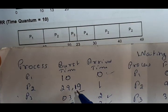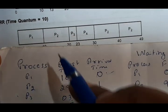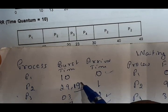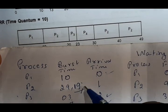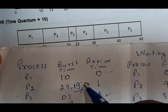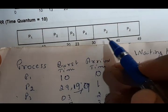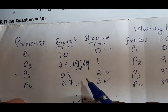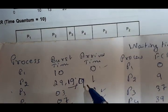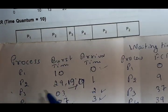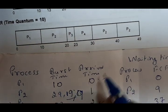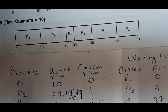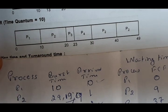P2 still remains. Time quantum is 10, so out of 19 remaining, it executes 10, from 30 to 40. Then 9 is still remaining. Since all other processes are already completed, P2 executes from 40 to 49.